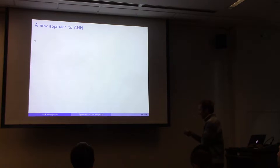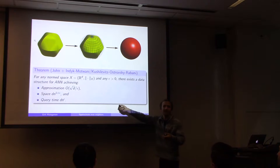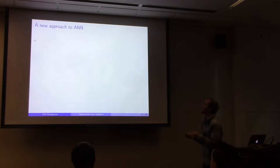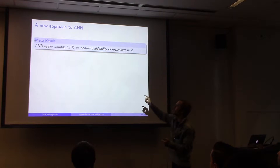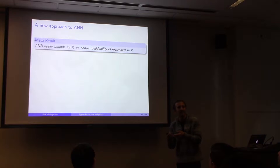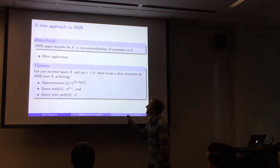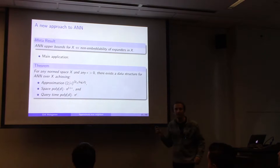This work tries to go beyond the embeddings approach and get approximation better than sqrt(d) — specifically subpolynomial in d. The meta-result of these two papers is: we understand algorithms for approximate nearest neighbors for norm X by studying to what extent expanders don't embed in the space. The application: for any norm space X and any epsilon, there exists a data structure achieving approximation 2^{sqrt(log d)}, using space poly-d times n^{1+epsilon} and query time poly-d times n^epsilon.